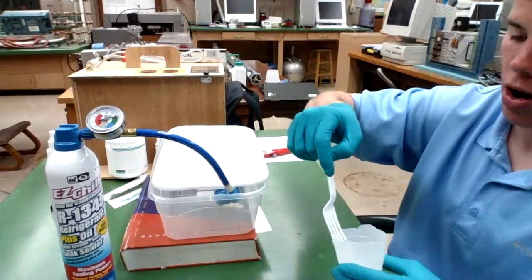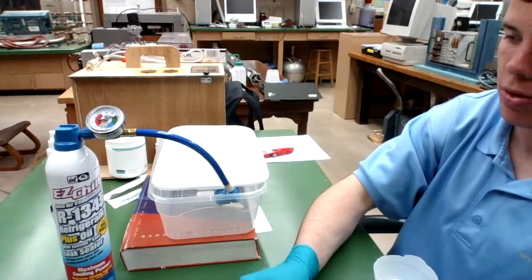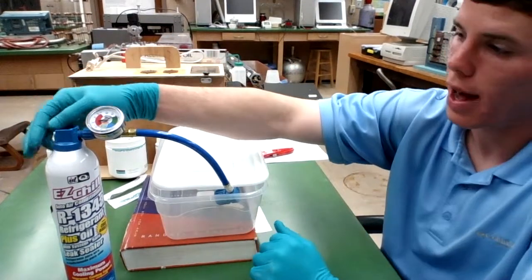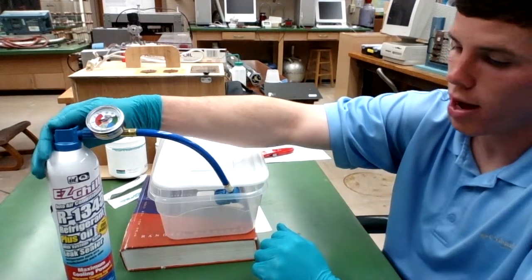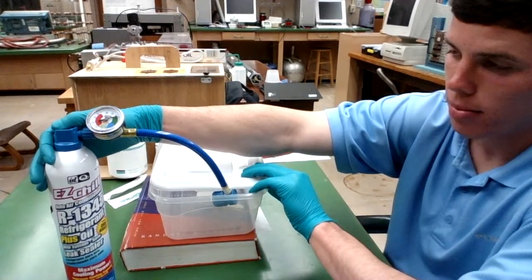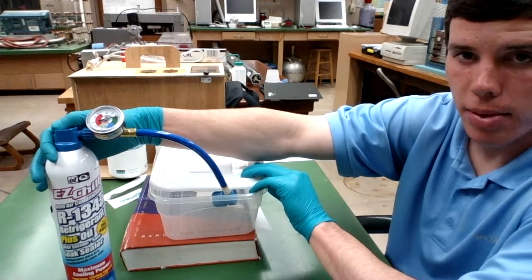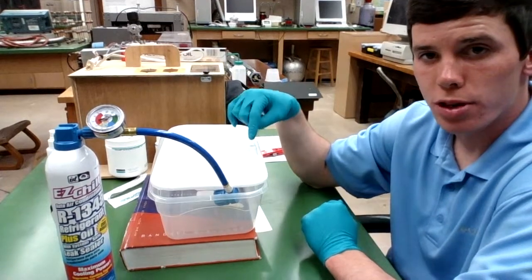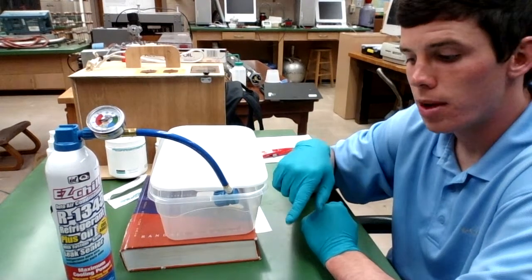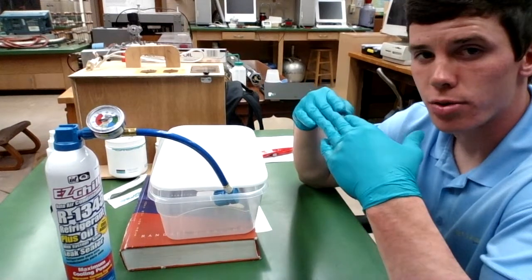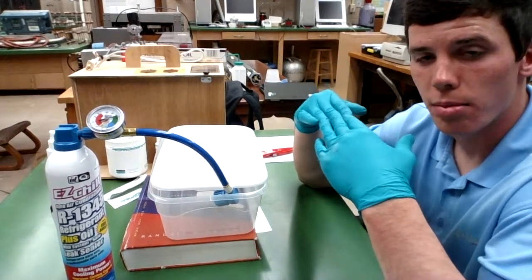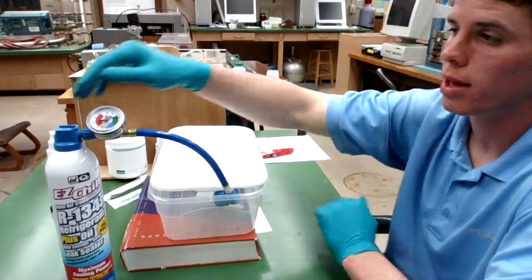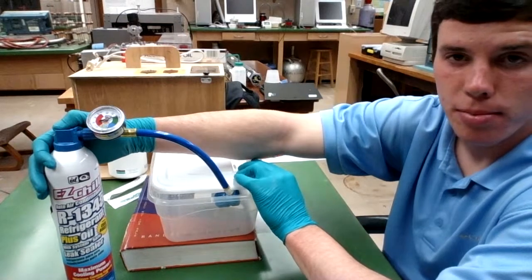What I have here is R134A automobile refrigerant. The way this works is it's going to drive out the bubbles from the PDMS because it is more dense than air. When I fill this chamber with refrigerant and place my PDMS inside there for 15 minutes, it'll displace the air bubbles in the PDMS, and the air will diffuse out, leaving me a completely bubble-free PDMS mixture.